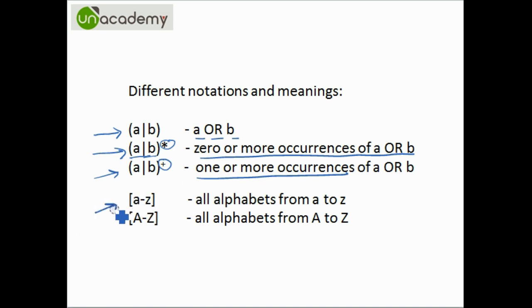And the square brackets contain, if there is a hyphen between two symbols, it will contain all alphabets within those two symbols. So here it will contain all alphabets from small a to small z.